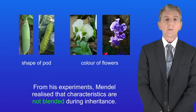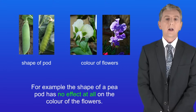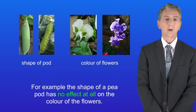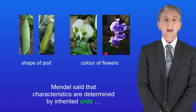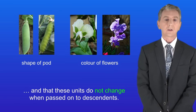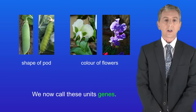From his experiments Mendel realised that characteristics are not blended during inheritance. For example the shape of a pea pod has no effect at all on the colour of the flowers. Mendel said that characteristics are determined by inherited units and that these units do not change when passed on to descendants. We now call these units genes.